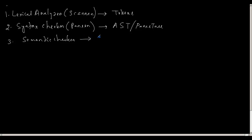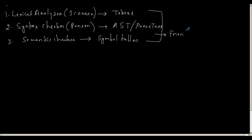For doing semantic checks we create various kinds of data structures like symbol tables and type checkers. Symbol tables store the types of variables, and any assignment not in accordance with the semantics will report an error. These three stages constitute the front end of the compiler. Now after that starts what we call as the back end of the compiler.